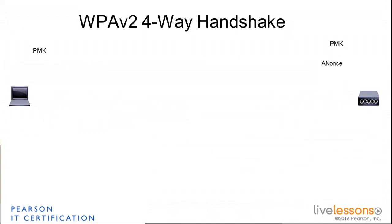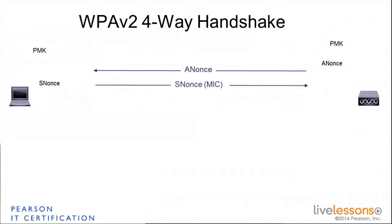We have a random number, which we call ANonce — that's the name you see on the screen — that is generated by the access point. This ANonce is going to be communicated to the client. The client is also going to generate a supplicant nonce, the SNonce. The client is going to send that SNonce in an encrypted manner back to the access point, and it's going to sign that frame with a message integrity check.